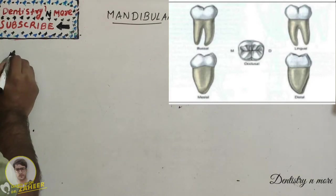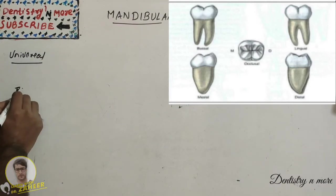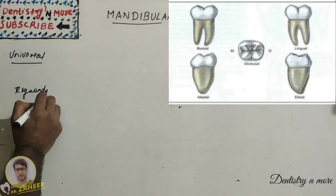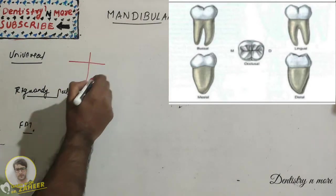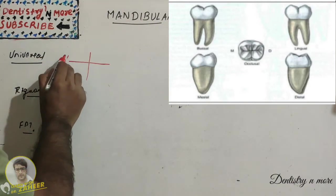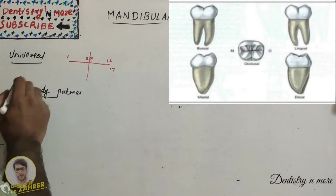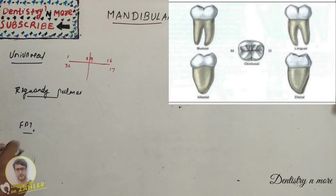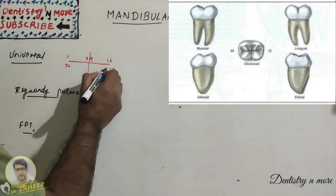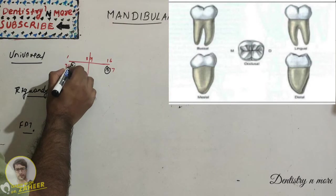We'll start with our numbering system. We have three numbering systems as you all know: universal, Zigmondy Palmer system, and FDI system. Universal system, since it is lower teeth, we have 1 here, 8, 9, 16, 17, and this will be 32. So we have two second molars, that is left second molar will be 18 and right lower second molar 31.